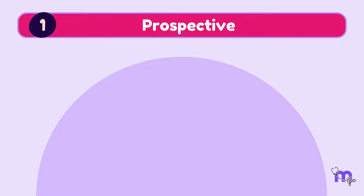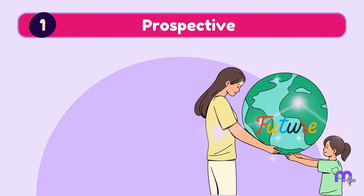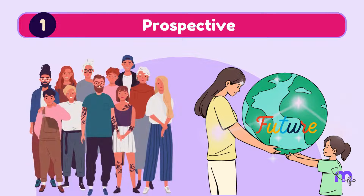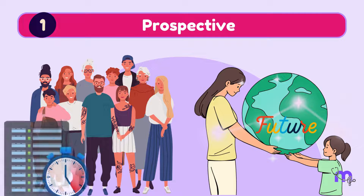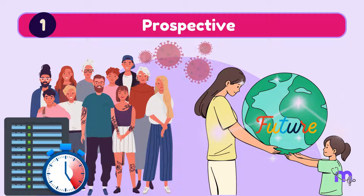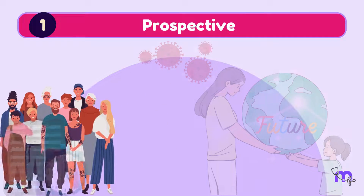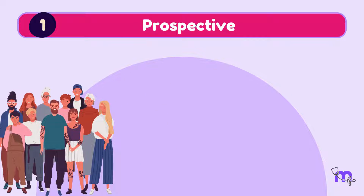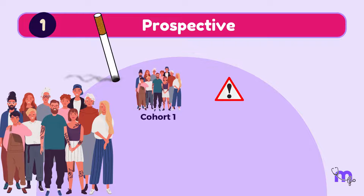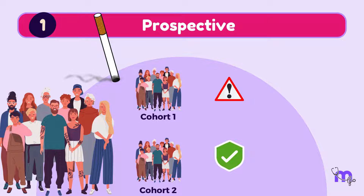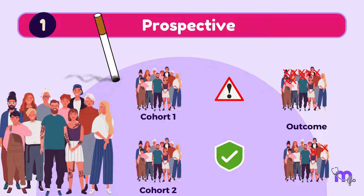The word prospective refers to something effective in the future. Therefore, in this type of study, I follow a group of individuals over time and collect data before the disease has occurred. For example, I follow and observe groups of people who smoke and do not smoke for some time to gather information and record the development of outcomes such as lung cancer.